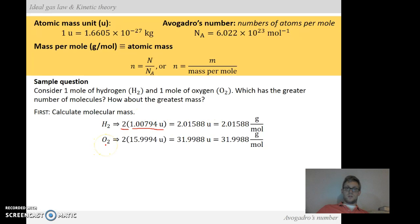We go to the oxygen. Oxygen is O2, which consists of two oxygen atoms. So we have the 15.9994 atomic mass units for oxygen. That gives us about 32 for the atomic mass or mass per mole for oxygen.